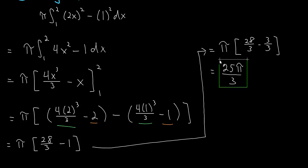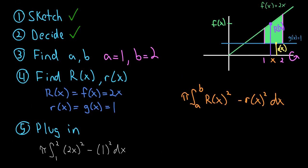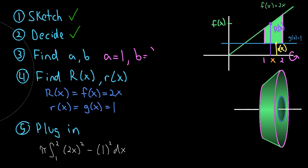The final answer is 25π/3, which is the volume of that solid with a hole in it, found using the washer method. In future videos we'll do more washer method examples, move on to the shell method, and also tackle problems where we have to decide on a method and set problems up from scratch — those will be the harder problems.